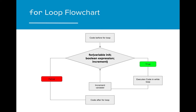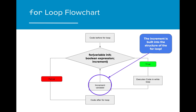The flowchart for a for loop looks very similar to that of a while loop. The big difference, however, is that the increment element for the for loop is built into the structure, whereas in a while loop we had to create a counter to stop while loops from running endlessly. For loops have a counter, or increment, built into the initial header.